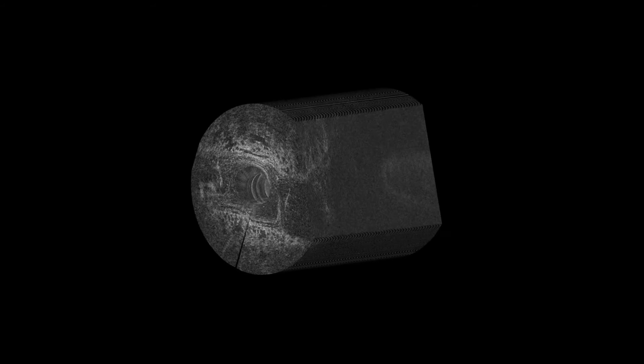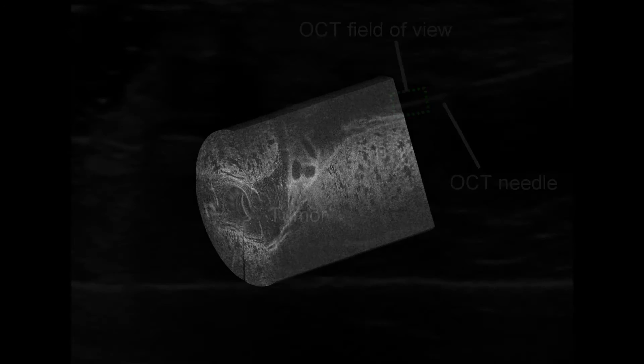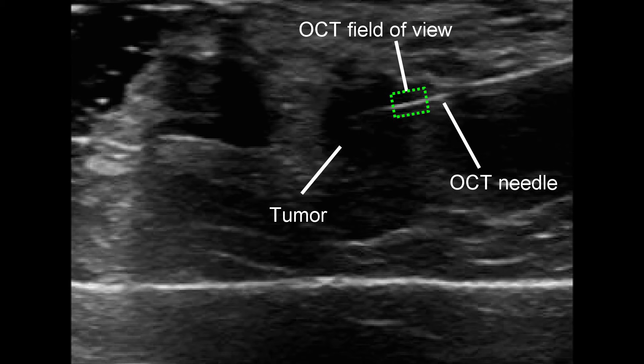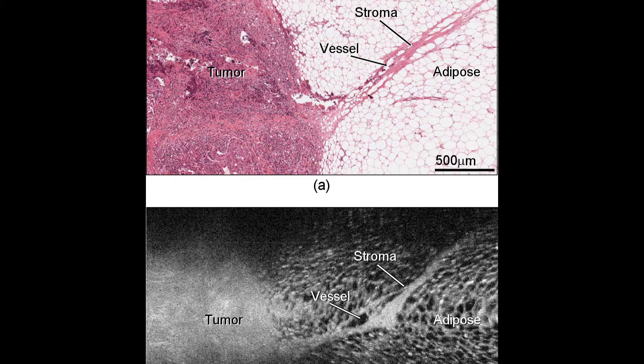The microscope in a needle allows doctors to see on the spot how the tumor is positioned and if it has spread. It helps them to see the difference between normal healthy tissue and small traces of diseased tissue, enabling surgeons to remove all of the diseased tissue in the first surgery.